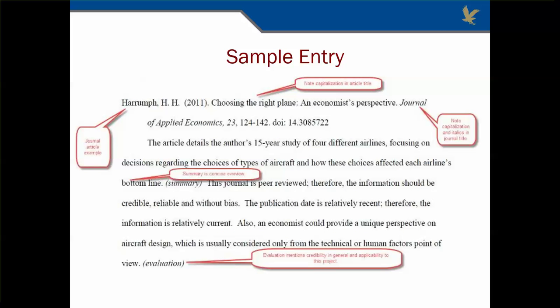The next source is from an academic journal. Again, note the capitalization and punctuation — this time of both the journal article title and the journal itself. Only the first word, proper nouns, and words after a colon are capitalized in a journal article title. The journal title is capitalized and italicized as you see here. Note also that the second and following lines of APA reference page entries are indented as you see here. Again, the summary is concise and the evaluation speaks to the overall value of the research and the applicability to the author's own work.